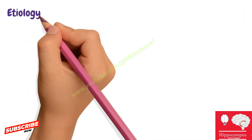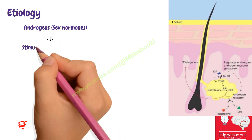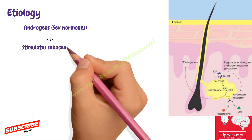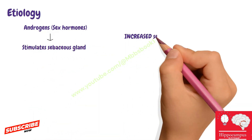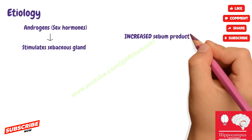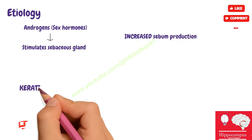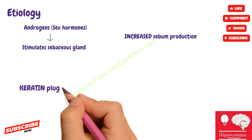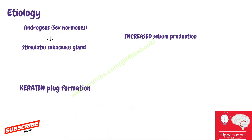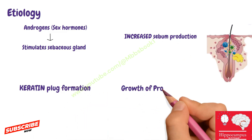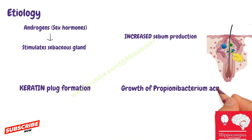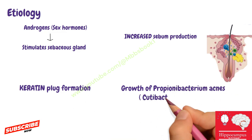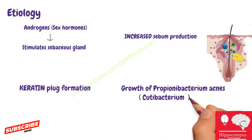The etiology includes: first, androgen stimulation of the sebaceous gland; second, increased sebum production from the sebaceous gland; third, keratin plug formation in follicles; and fourth, increase in the commensal bacterium Propionibacterium acnes — whose new name is Cutibacterium acnes.